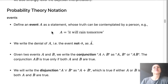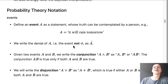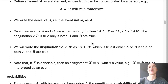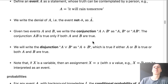As for notation: we define an event as a statement whose truth can be contemplated — for instance, A is the event 'it will rain tomorrow.' We will write the denial, not-A, as A-bar. The operations we are mostly interested in are conjunction and disjunction: conjunction is the AND operation or the product, disjunction is the OR operation or the sum.